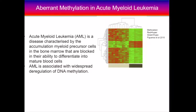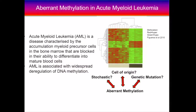What was most interesting for us was to see what was the source of this aberrant methylation. There are several reasons. It could be stochastic, as cancer methylomes have been shown to be quite stochastic. It could be a cell of origin issue where the methylation pattern you're seeing is a result of the cell from which the leukemia originated, or it could be a genetic mutation that's actually driving aberrant methylation.